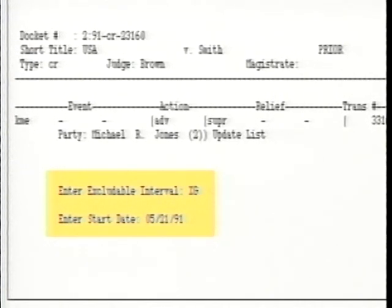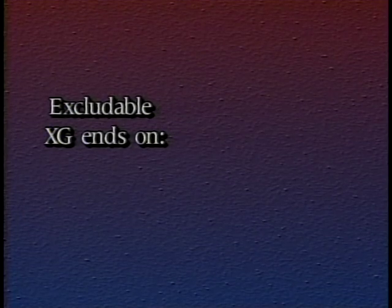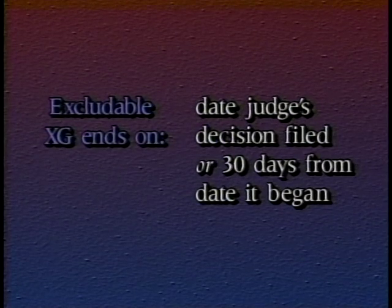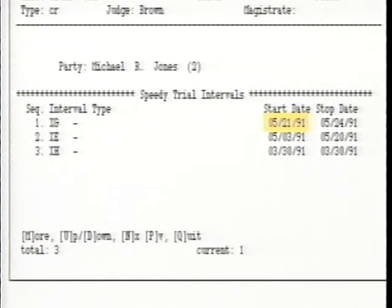Excludable XG begins on the day following the date on which the court has received everything it needs from the parties. Since Judge Steiner had everything she needed on May 20th, you would open the XG as of May 21st. An excludable XG is limited to 30 days — the court may take a motion under advisement for up to 30 days before the XG ends and the speedy trial clock resumes. So XG ends either on the date the judge's decision is filed or, at the latest, 30 days from when it began. In our example, if Judge Steiner issues an order on May 24th, the XG ran four days, from May 21st through May 24th.